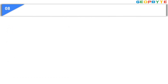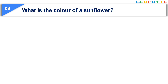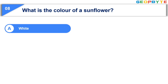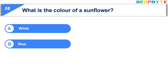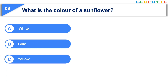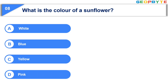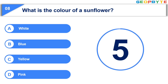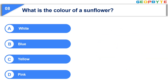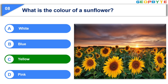The eighth question is: What is the color of a sunflower? Option A, white. Option B, blue. Option C, yellow. Option D, pink. Your time starts now. Your time is up and the correct answer is Option C, yellow.